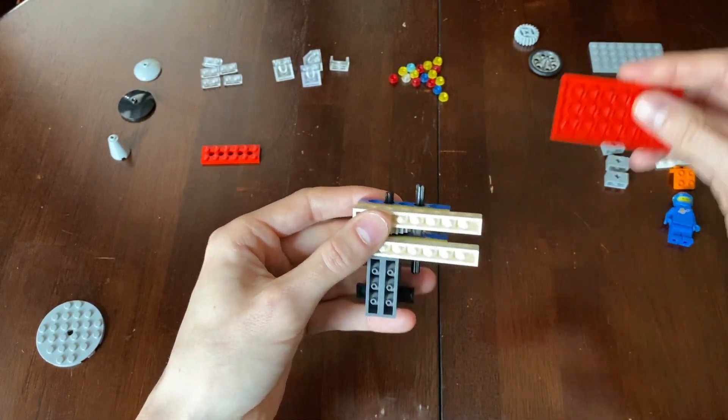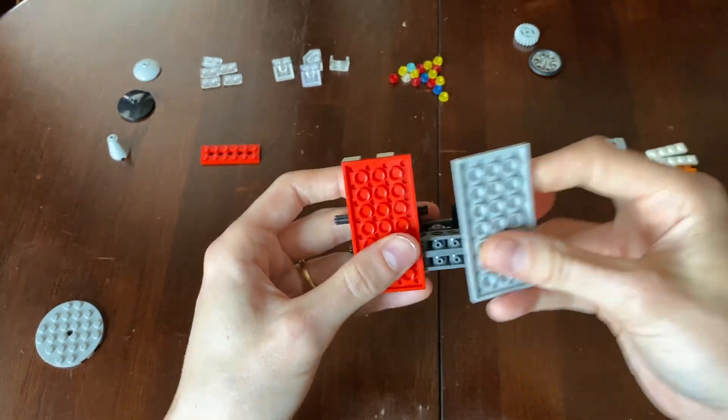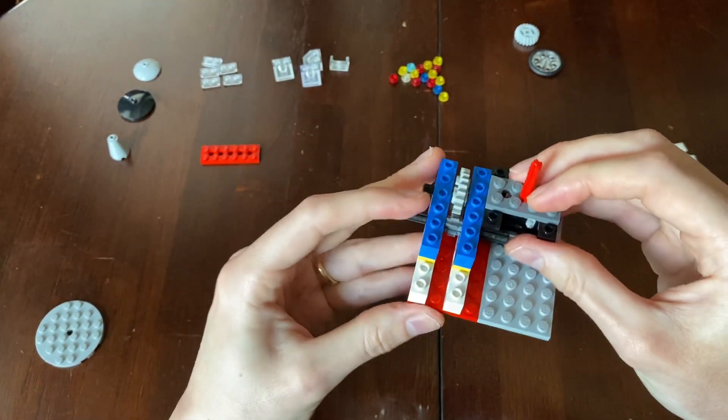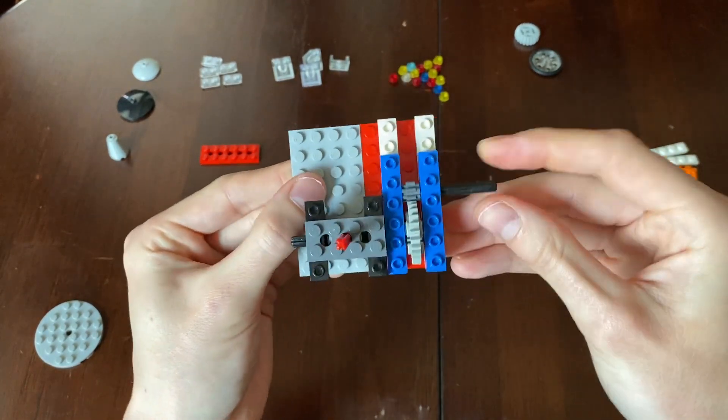Why don't we put this on top of something? Let's take two of these pieces here. There. Now it's looking like a machine, right? Now it's looking good.